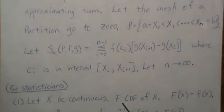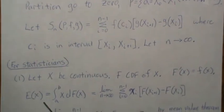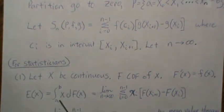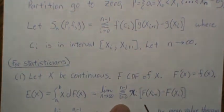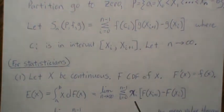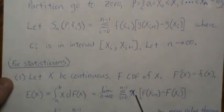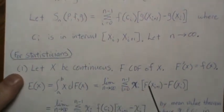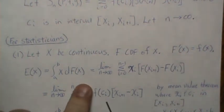In example one, let X be continuous. Let F be the CDF of X, and the density is the derivative of the CDF. Now let's find the expected value of X. In Riemann-Stieltjes notation it's this, and using this formula it becomes this. Instead of calling it c, I called it script x. Remember, script x is a value in the interval [x_i, x_{i+1}].